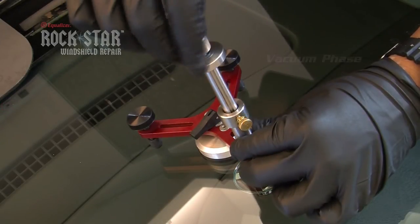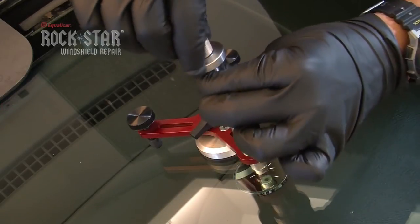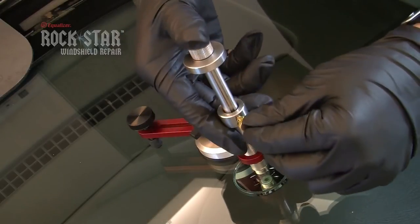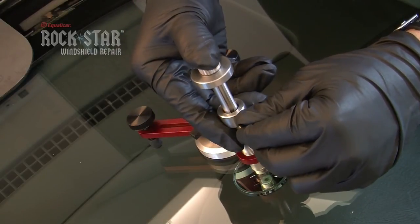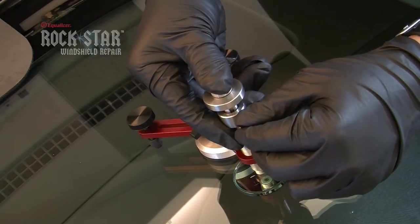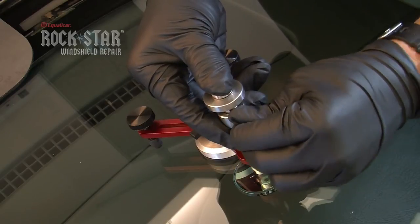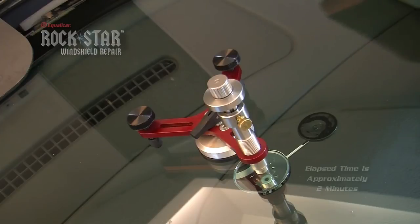Release the vacuum by loosening the injector pressure rod. Then retighten the injector pressure rod to secure the seal. Loosen the retaining screw and push the injector in a downward motion until the point when you feel resistance. Then tighten the retaining screw. You are now in pressure phase.